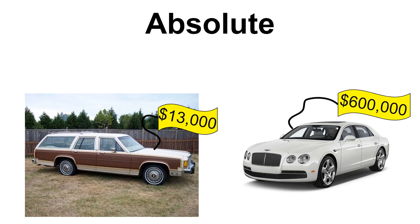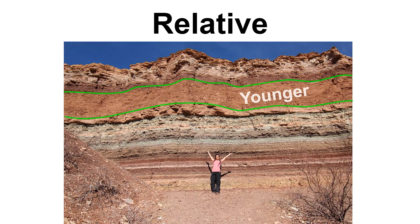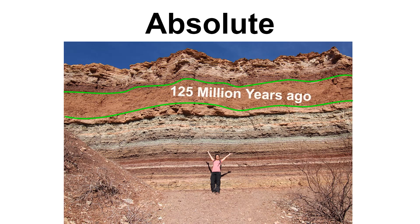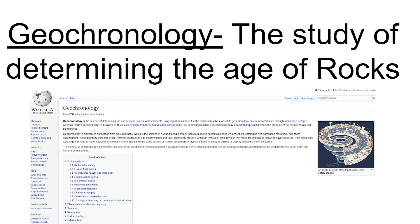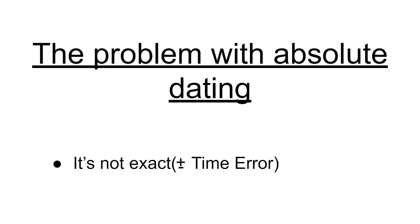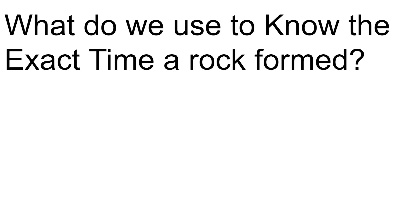We're going to be putting numbers on fossils, not cars. Relatively, younger layers are on top most of the time — unless it's been overturned — and older layers are on the bottom. Absolute dating is when we take a piece of that rock and say it is 125 million years old and the rock below is 130 million years ago. The study of this is called geochronology — the study of determining the age of rocks. The problem with absolute dating is that it's not completely exact; it has a time error depending on what radioactive isotope you're using.